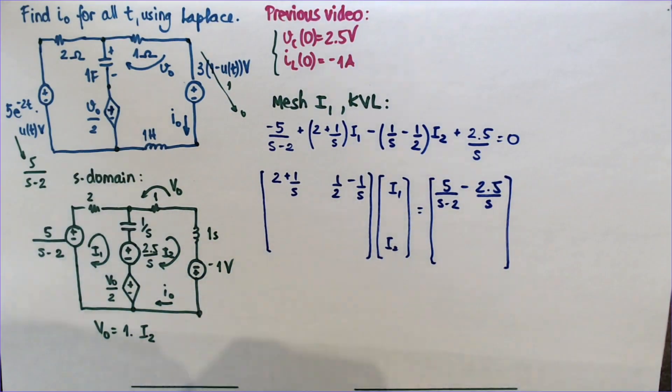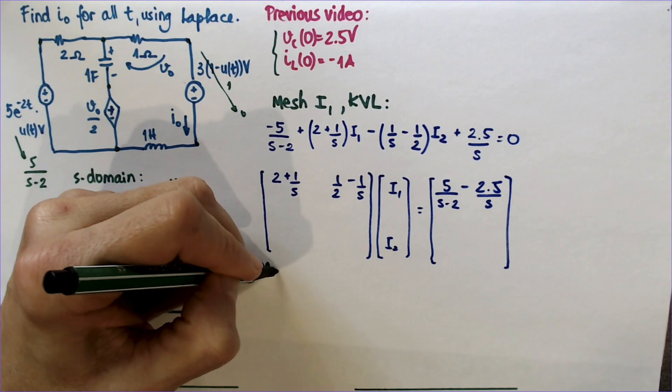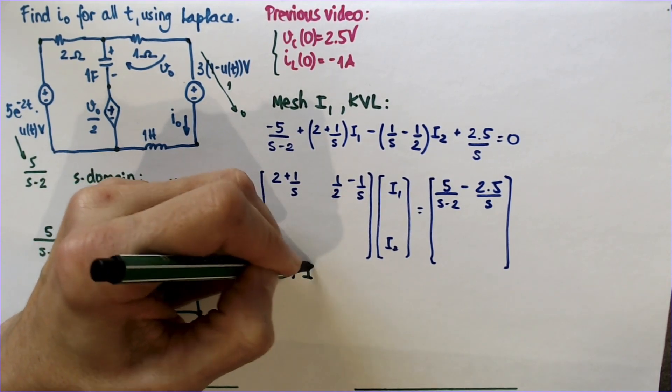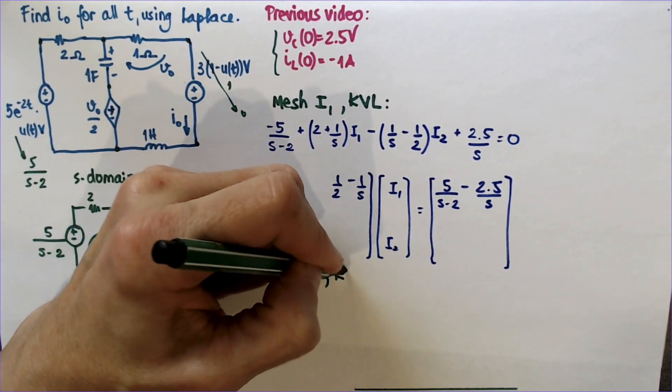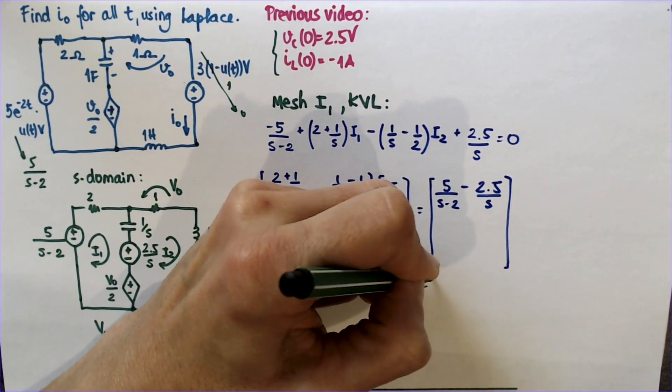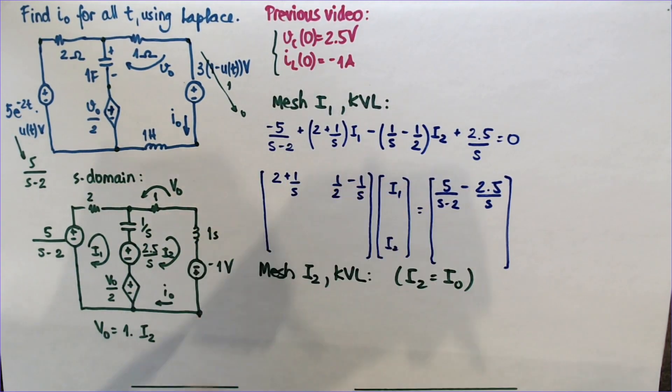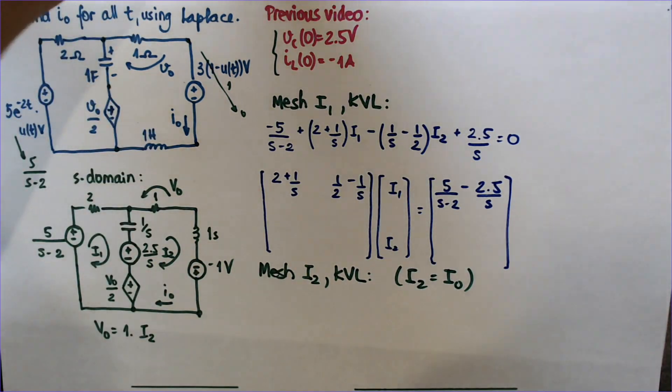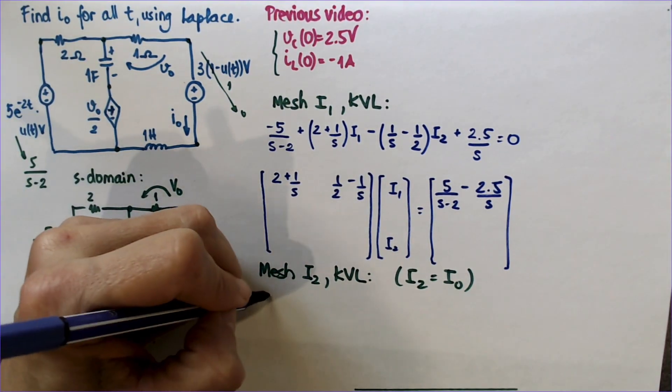And now let's do the second mesh. Mesh I2, I'm also going to do KVL, knowing that obviously I2 is the thing I'm after here. So I'm going to start again.